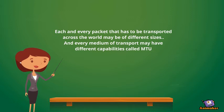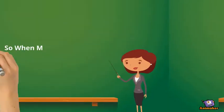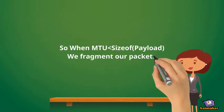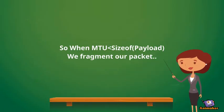Each medium may have different capabilities, termed as MTU. So when the MTU is less than the size of the packet, we fragment our packet.